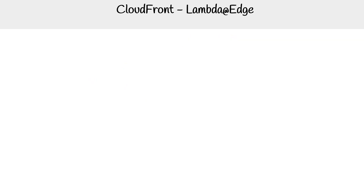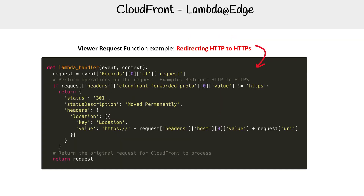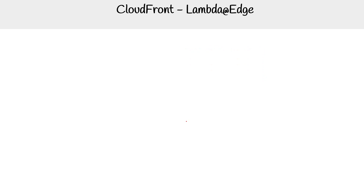Let's look at some examples, one for each. For viewer requests, we are redirecting HTTP to HTTPS. Here we have the request header, we see that it is HTTP, so we tell it 301 and we change that value there.